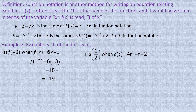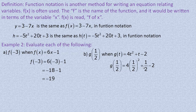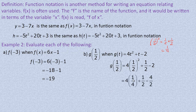Next we're asked to find g of one half when g of t equals 4t squared plus t minus 2. One half is the value for t, so we put one half in place of t everywhere. Now, one half squared is one half times one half: the numerator is 1 times 1 equals 1, and the denominator is 2 times 2 equals 4. So one half squared equals one quarter. That's why the one half squared becomes one quarter in the next line.